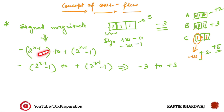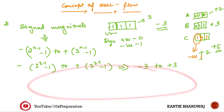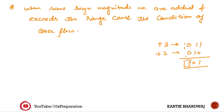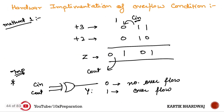One more thing to keep in mind: 2's complement form is different from sign magnitude. In 2's complement the range is from minus (2 raised to the power n minus 1) to plus (2 raised to the power n minus 1 minus 1). Whenever sign magnitude numbers are added and the result exceeds the range, it causes overflow. We need to check whether we are within the range; if we go outside, we need to take precautions.